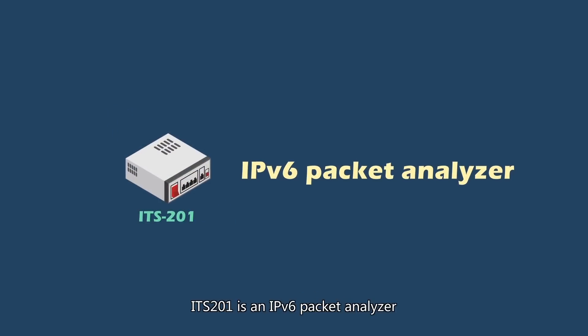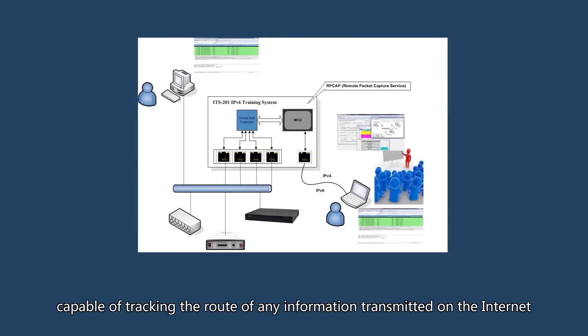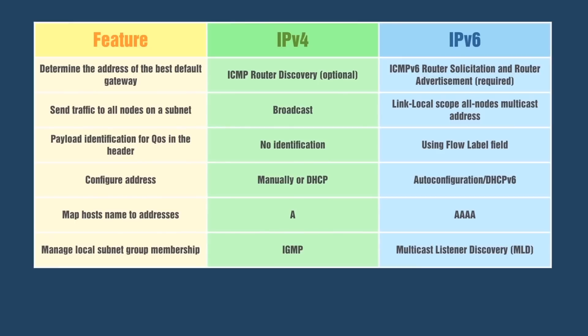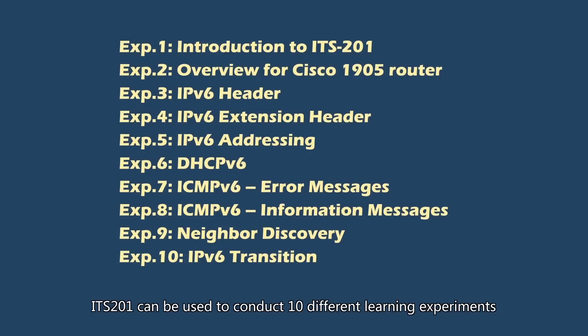ITS201 is an IPv6 packet analyzer capable of tracking the route of any information transmitted on the Internet. ITS201 can be used to conduct ten different learning experiments.